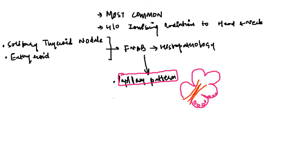Within these papillary projections there are calcifications, and these calcifications within the papillary pattern are called psammoma bodies. These are a typical feature of papillary carcinoma of the thyroid.